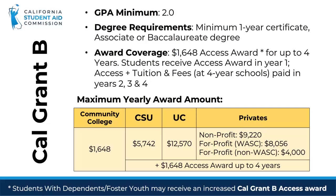For a Cal Grant B, the coursework must be at least one academic year in length, and it may be a certificate or degree program. Students with dependent children and foster youth may be eligible for an increased access award with a Cal Grant B.